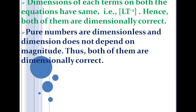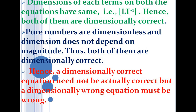Pure numbers are dimensionless, so the numerical coefficients do not affect dimensional correctness. Thus both equations appear dimensionally correct, but only one is actually the correct physical equation. So we can say: a dimensionally correct equation need not be an actually correct physical equation. However, a dimensionally wrong equation is always a wrong physical equation.